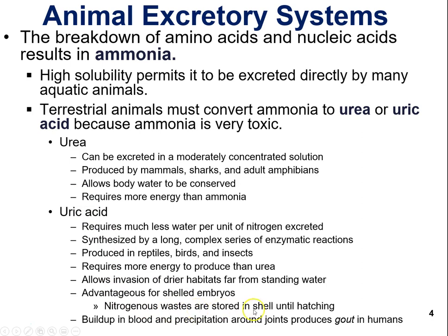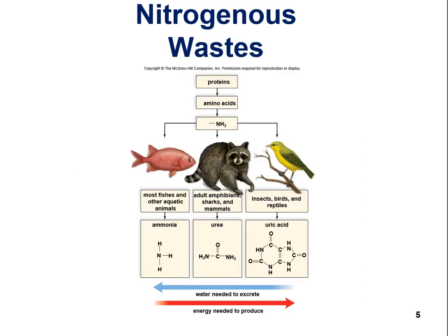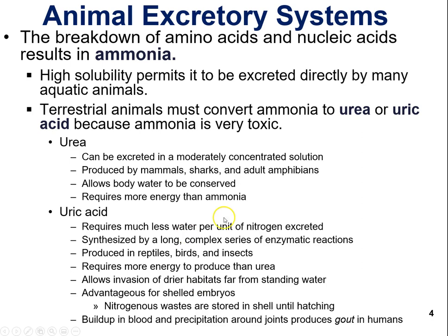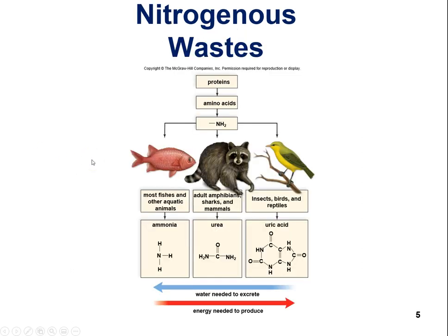For shelled embryos, nitrogenous wastes are stored in the shell until hatching and then excreted. Buildup of uric acid in blood and precipitation around joints produces gout in humans. For the most part, mammals and humans produce urea, not uric acid.